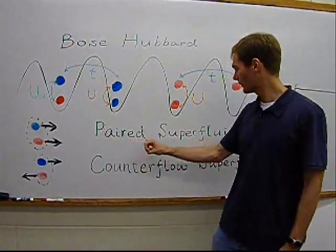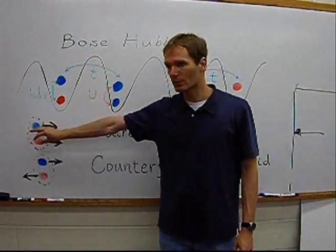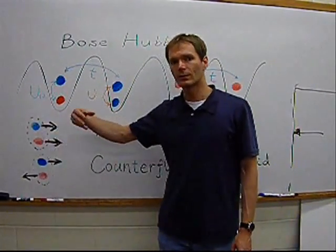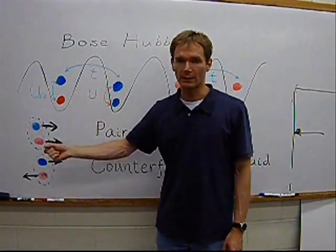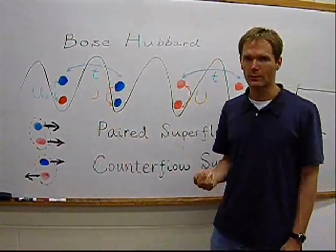One of them is a paired superfluid state, in which the two species form a paired surface between the two species, and then form a quasi-condensate out of these bosonic entities. That happens for attractive interaction between the two species.